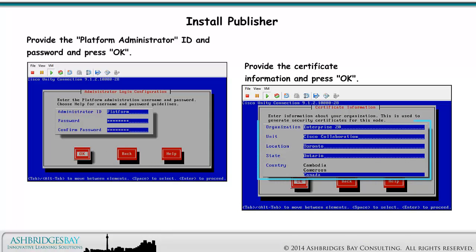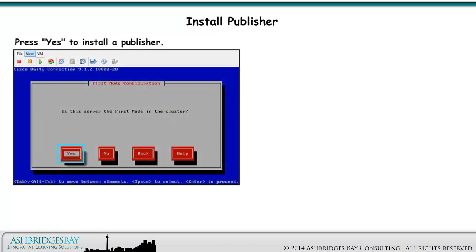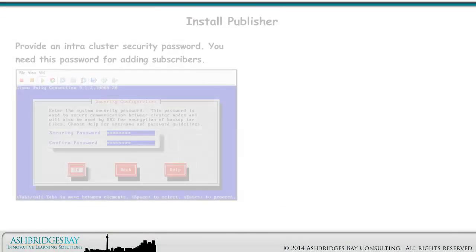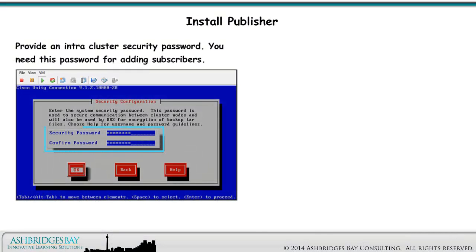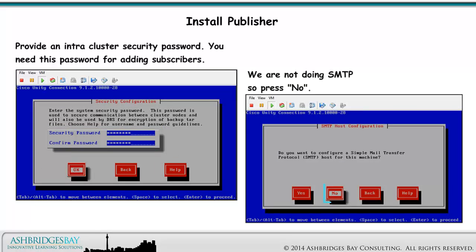Provide the certificate information and press OK. Unless you have a security team to provide these values, just enter something reasonable. Press Yes to install a publisher. Provide the address of your NTP server and press OK. Provide an intercluster security password — you need this password for adding subscribers. We are not doing SMTP, so press No.